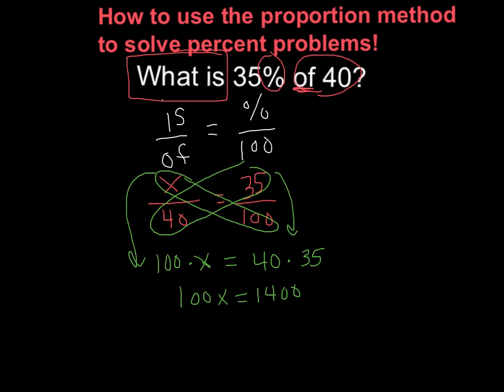The next step is to isolate our variable, and we have 100 next to x. We want to get that x all by itself, so the inverse operation of multiplying is dividing. I'm going to divide both sides by 100, and I'm going to be left with x equals 14.